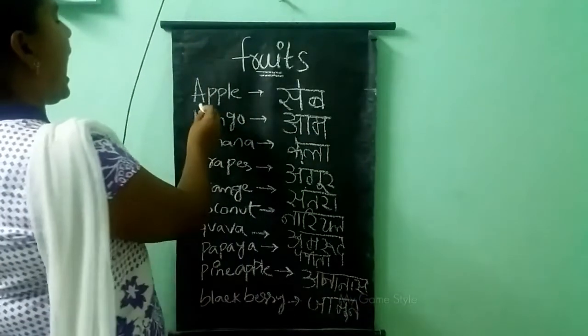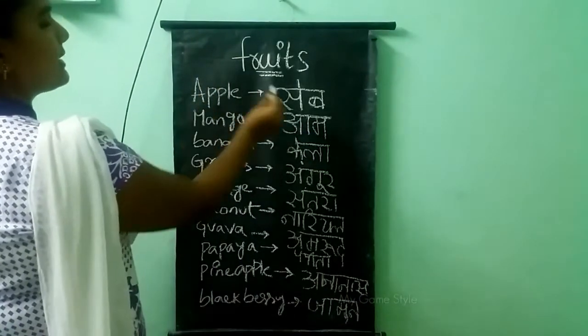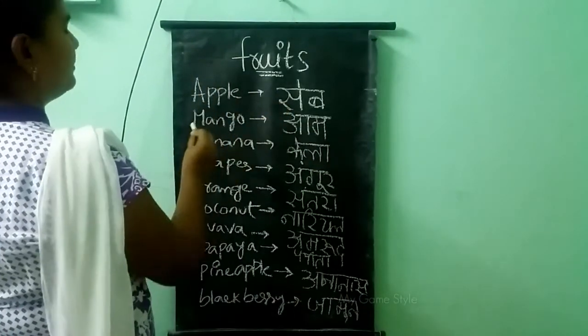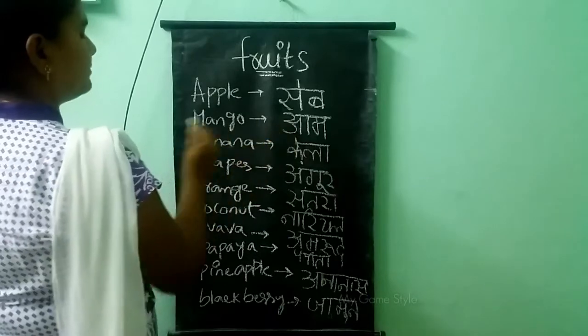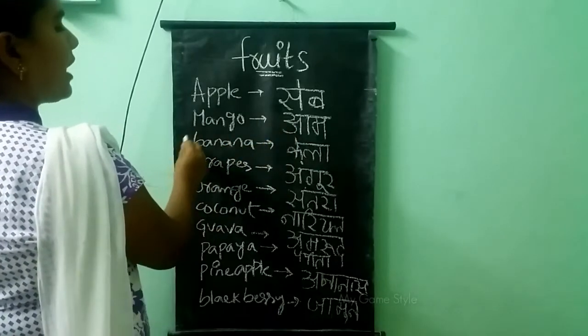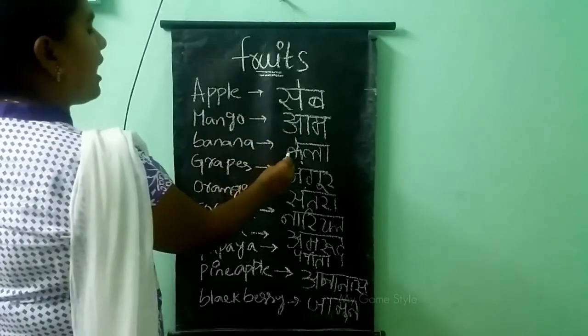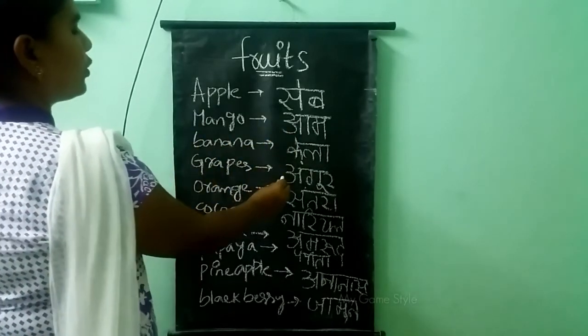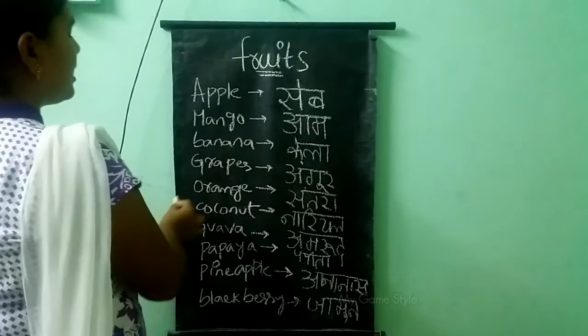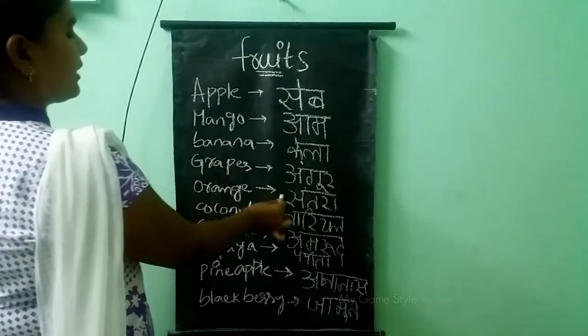Apple, sieve. Mango, aam. Banana, kela. Grapes, anggur. Orange, santra.